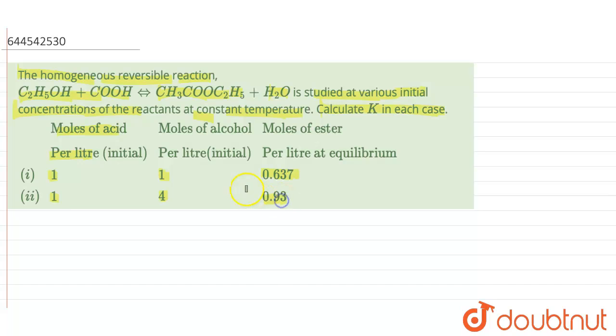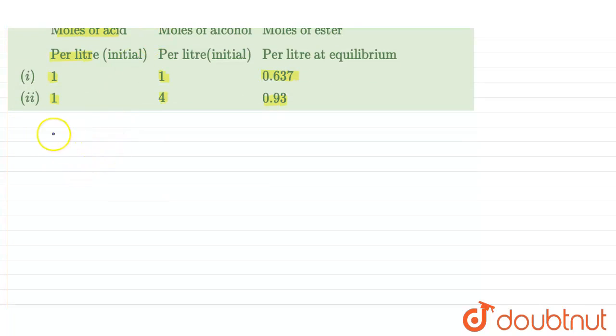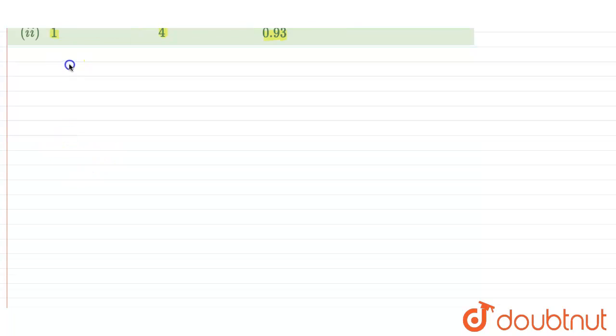So to begin with, first we can write down the reaction involved in this case. The reaction is C2H5OH plus COOH at equilibrium forms CH3COOC2H5 plus H2O. When T equals zero, that is at initial, in the first case we have 1 mole of acid, 1 mole of alcohol.